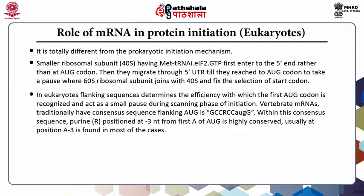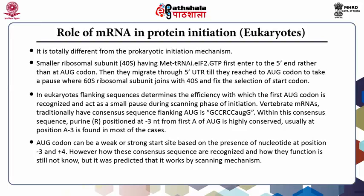In eukaryotes, flanking sequences determine the efficiency with which the first AUG codon is recognized and act as a small pause during the scanning phase of initiation. Vertebrate mRNAs traditionally have a consensus sequence flanking AUG: GCC, RCC, AUG, G (5' to 3'). Within this consensus, the purine R positioned at -3 from the first A of AUG is highly conserved, and an A at position -3 is found in most cases. The AUG codon can be a weak or strong start based on nucleotides at downstream +3 or upstream -5 positions. How these consensus sequences are recognized is still not fully known, but it is predicted to work by a scanning mechanism.